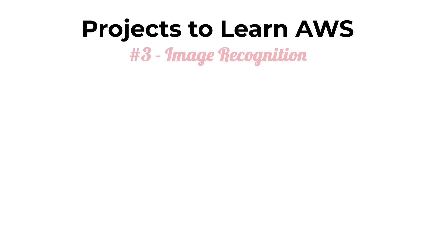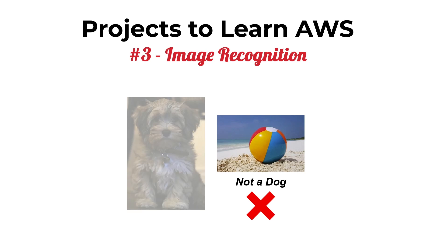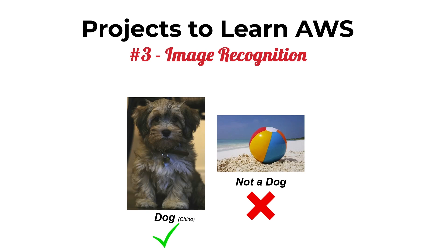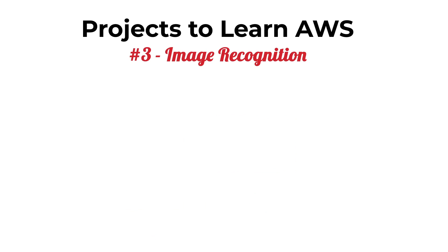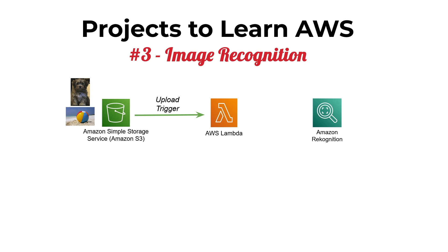Another application idea is image recognition. What if we want to build an application that can detect dog images? For example, a beach ball is not a dog, but a photo of Chino — that's my dog — clearly is. To build this on AWS, we store our files in Amazon S3 (Simple Storage Service) and configure the S3 bucket so that anytime a file gets uploaded it triggers a Lambda function. The Lambda function receives the filename of the uploaded S3 object and calls Amazon Rekognition, which is an image detection service based on machine learning provided by AWS.